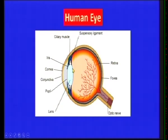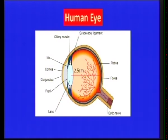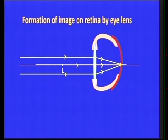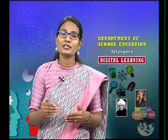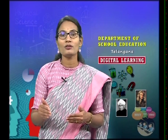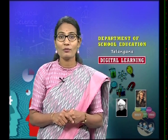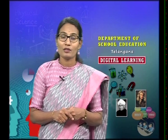In low light, the iris makes the pupil expand. The eye lens is in the shape of a convex lens. The distance between the lens and the image falling on the retina — called the image distance — is equal to 2.5 centimeters. Light rays coming from a longer distance fall on the eye lens and form an image on the retina. However, as per the lens formula 1/f = 1/v − 1/u, whenever the object distance changes, the image distance also changes.